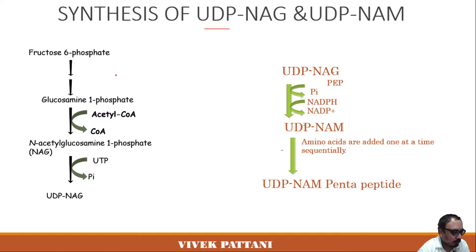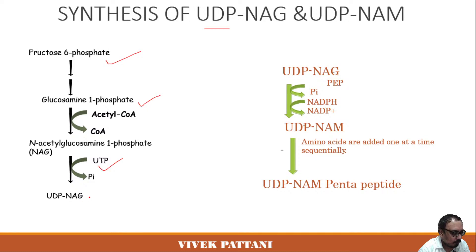UDP-NAG is formed from fructose-6-phosphate, which is converted into glucosamine-1-phosphate. In the presence of acetyl-CoA, it is converted — releasing CoA — to form N-acetylglucosamine-1-phosphate. Finally, with the help of UTP, phosphate is released and UDP-NAG is formed.